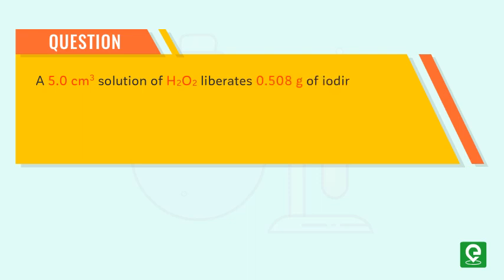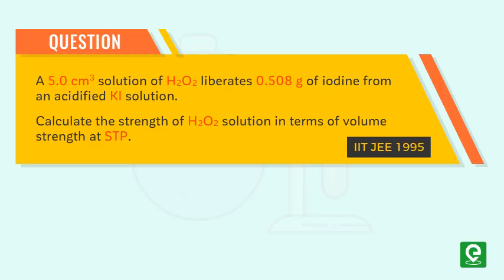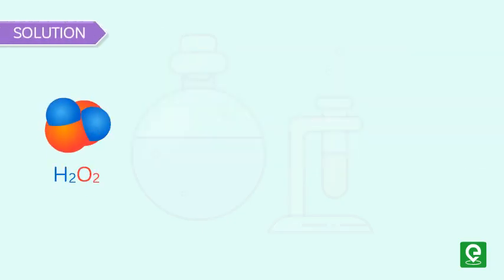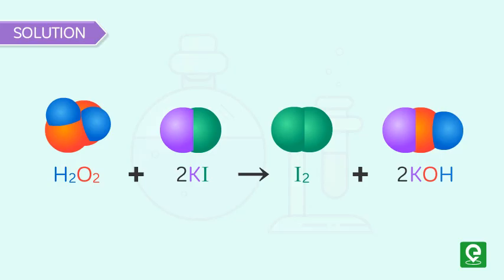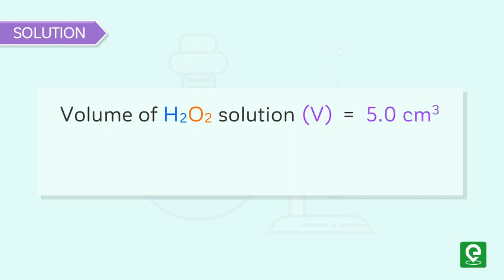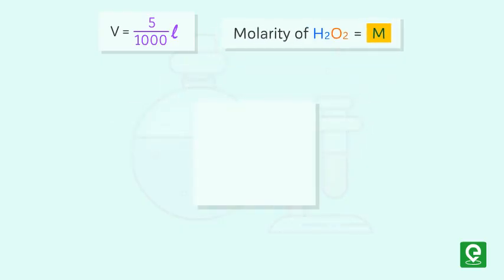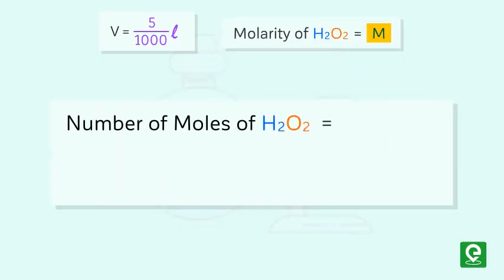Question 1: A 5.0 cm³ solution of H₂O₂ liberates 0.508 grams of iodine from an acidified potassium iodide solution. Calculate the strength of H₂O₂ solution in terms of volume strength at STP. (IIT JEE 1995) Solution: Catalytic decomposition of hydrogen peroxide by potassium iodide results in release of iodine and formation of potassium hydroxide. Volume of H₂O₂ solution V = 5.0 cm³ = 5/1000 liters. Let molarity of H₂O₂ = M; moles of H₂O₂ = M × 5/1000.